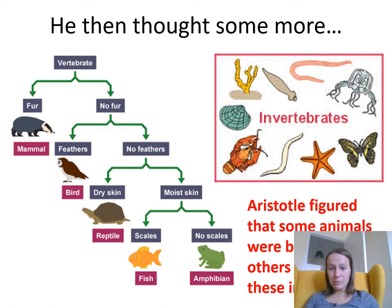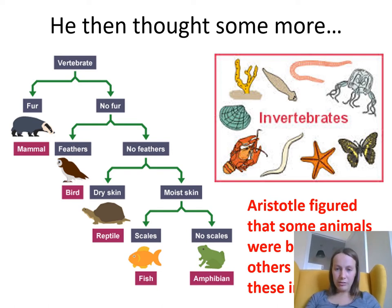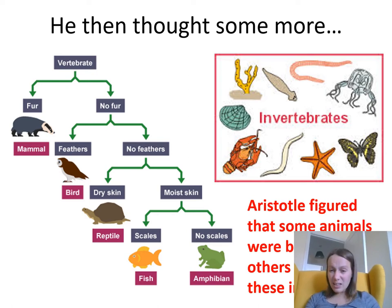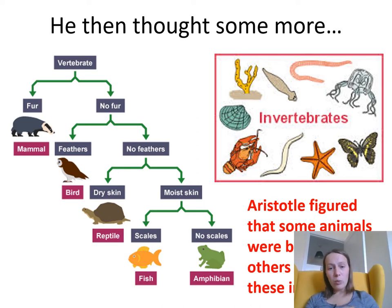When he'd established that he was going to put animals without bones in a different category to animals with bones, he then started thinking about: is it furry or not furry? Has it got feathers or not? Has it got dry skin or wet skin? And this is really how he came up with these original characteristics of categories that we could put animals into.